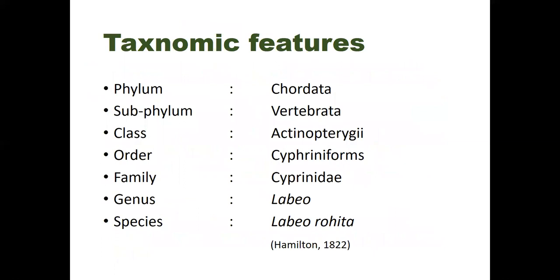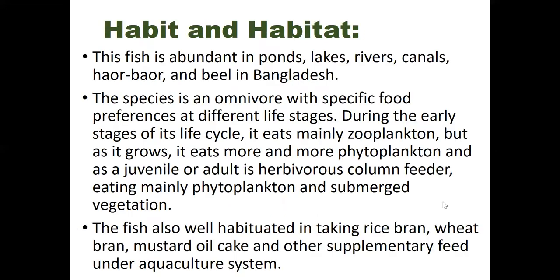The taxonomical or systematic position of Rui fish: Phylum is Chordata, Subphylum is Vertebrata, Class is Actinopterygii, Order is Cypriniformes, Family is Cyprinidae, Genus is Labeo, and Species is Labeo rohita. You have to memorize all this classification information.